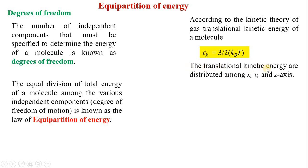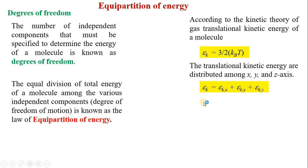The translational kinetic energy is distributed among the X, Y, and Z axes. Each atom or molecule translates along three axes. The kinetic energy is divided into three components: epsilon kx, epsilon ky, and epsilon kz. The total kinetic energy is epsilon k equal to epsilon kx plus epsilon ky plus epsilon kz.